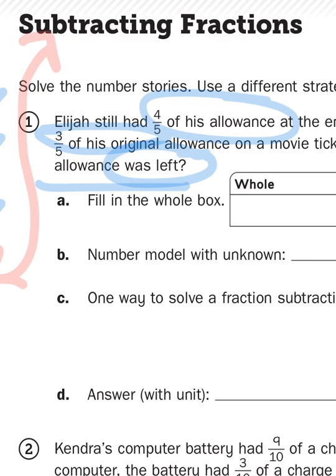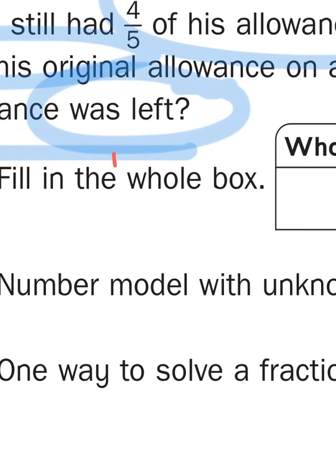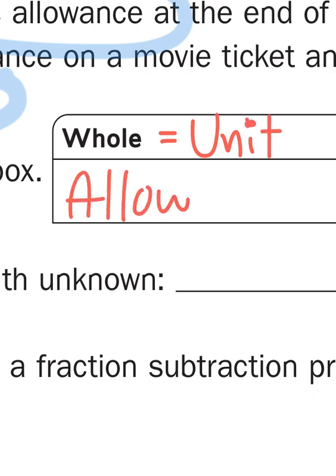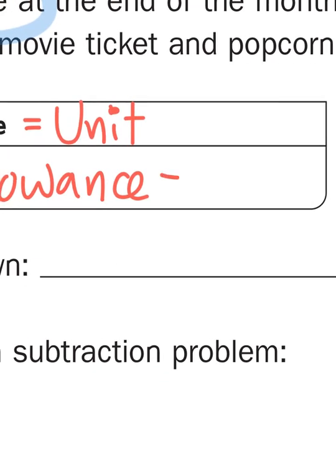When it asks me to fill in the whole box, they should probably put whole in quotation marks. Not fill in the entire box. Just tell me what is the whole. And another word for us to think about whole is unit. What am I counting here? Well, I'm counting allowance, which would probably be paid in the form of money. So I'm really counting money.